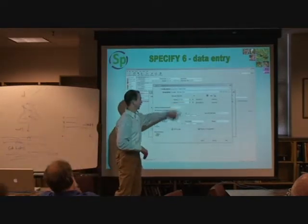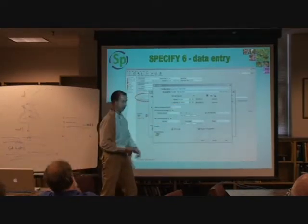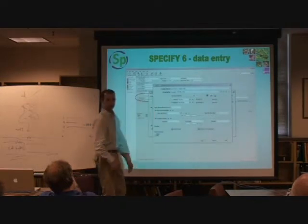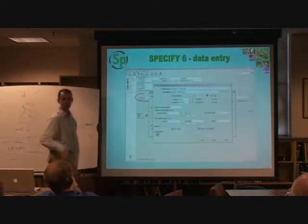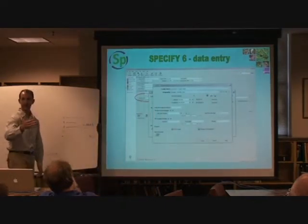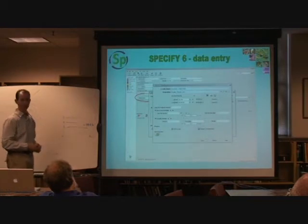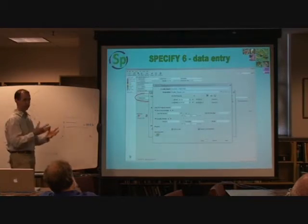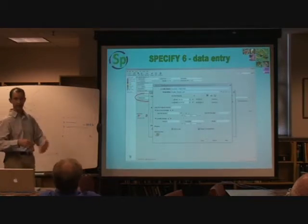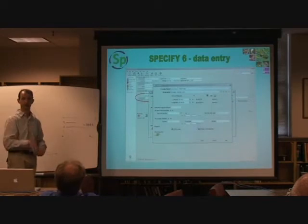By the same token, once you have a latitude and longitude in there, the Google Earth button will become available, and you can visualize that particular item in Google Earth directly from here. This particular record will be visible in Google Earth so that you can check your lat and long and make sure it's in the right place.